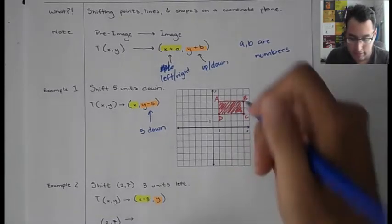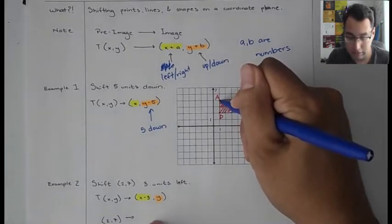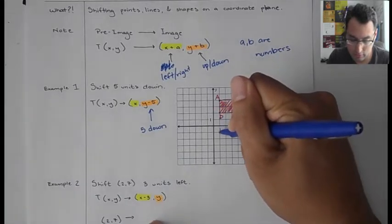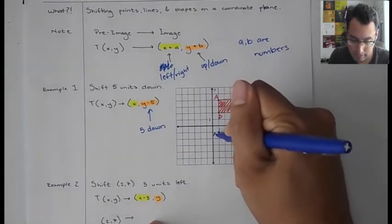So I'm going to start with A. So A, I'm just going to, from that point, I'm just going to count down five. So here, one, two, three, four, five. So A is now right here. But I'm going to label that as A with a prime, which is A prime.